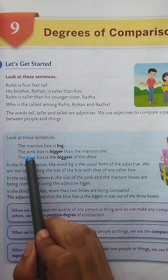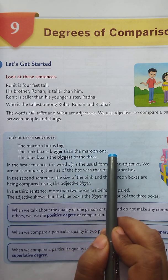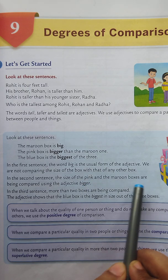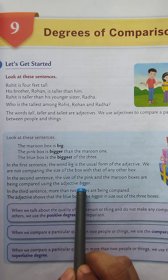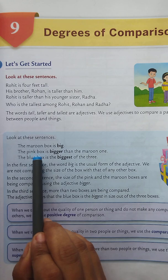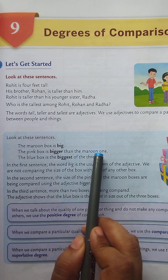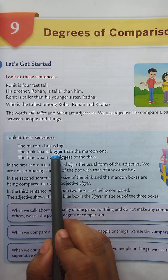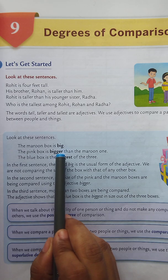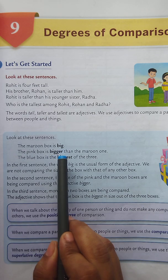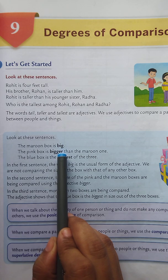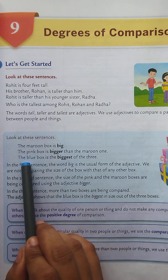In the second sentence, the pink box is bigger than the maroon one. Here, the size of the pink and the maroon boxes are being compared using the adjective bigger. We are comparing two boxes, and for this we are using the adjective bigger. When we compare between two persons or two things, we use the comparative degree of adjective. Bigger is the comparative degree.